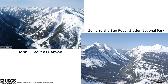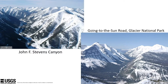Here's an example. Those of you familiar with the Going-to-the-Sun Road, and this is John F. Stevens Canyon along Highway 2 over Marias Pass. There's a railway there — you can see some of the sheds. These are decent-sized avalanche paths that affect the transportation corridor in both places.